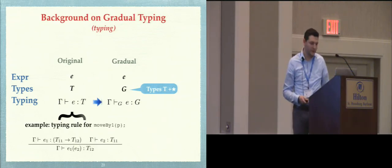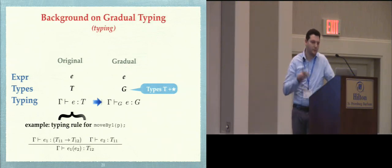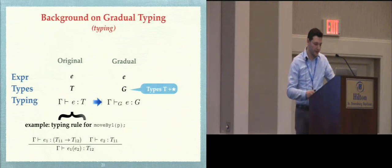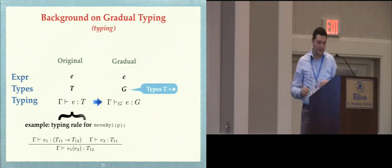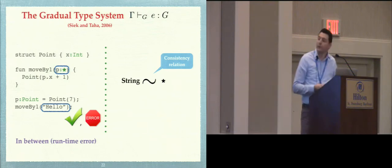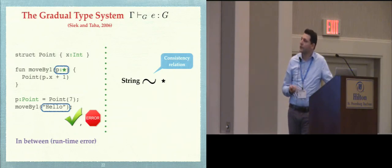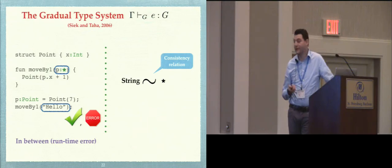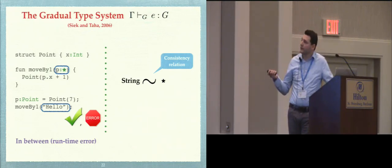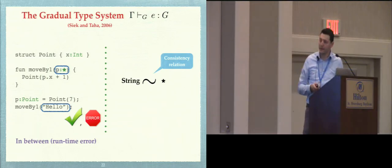That particular system will have the ordinary typing rule for type applications. From the static type system, we derive the gradual type system. The gradual type system needs to allow certain parameter passing. Intuitively, it does so because we consider strings consistent with the dynamic type. So we use the consistency relation, which was first defined in the original paper on gradual typing by Siek and Taha.